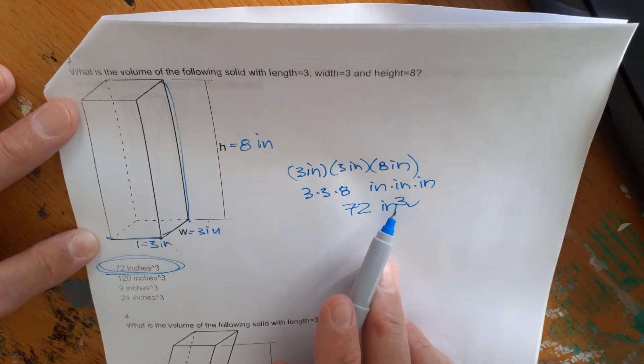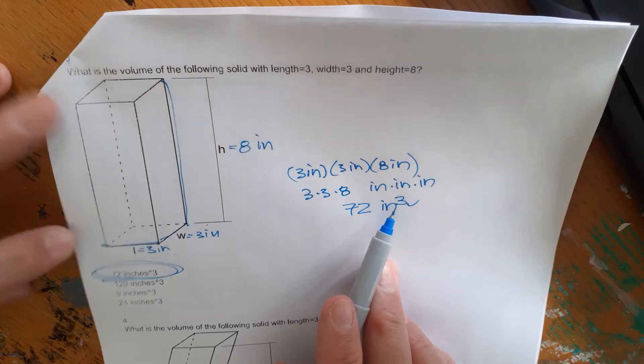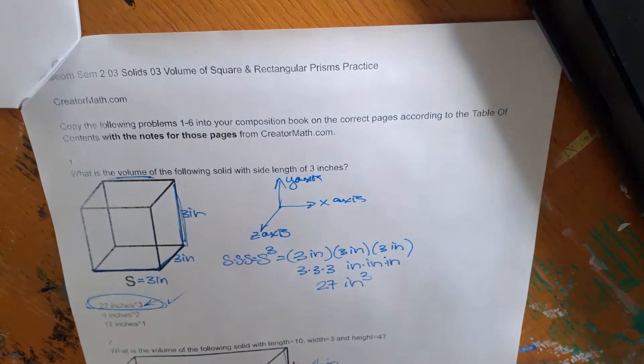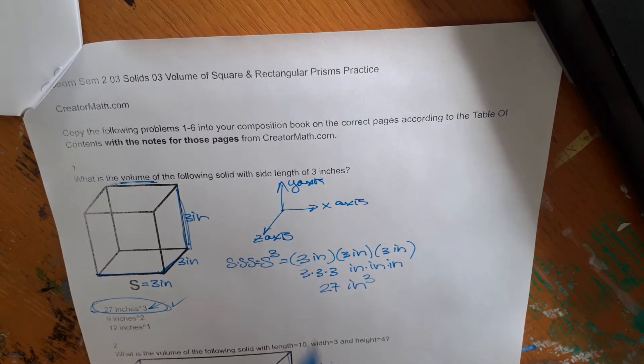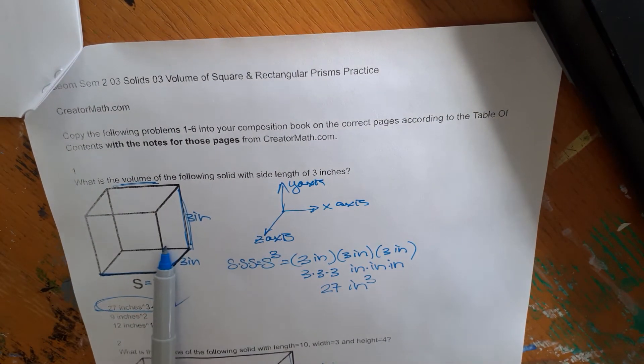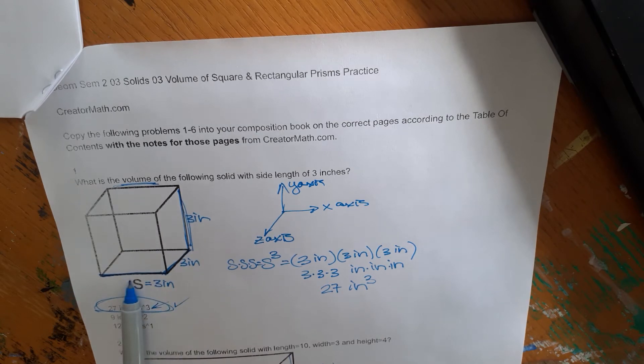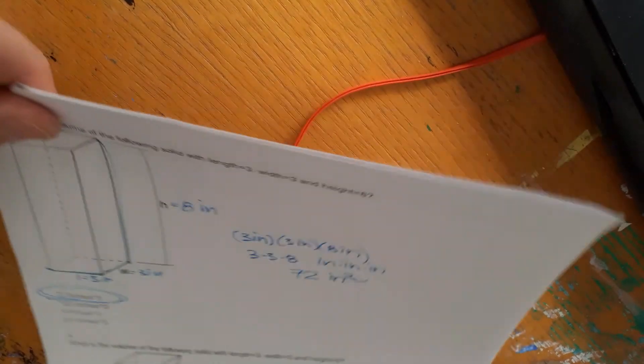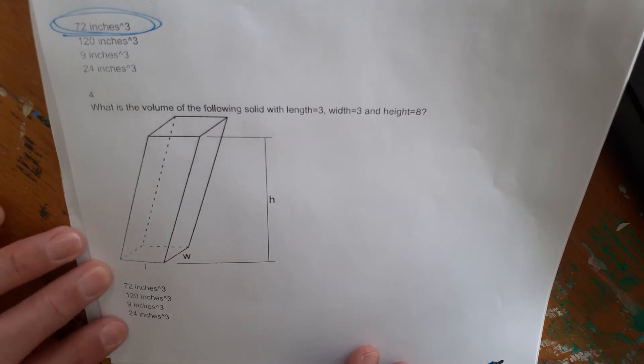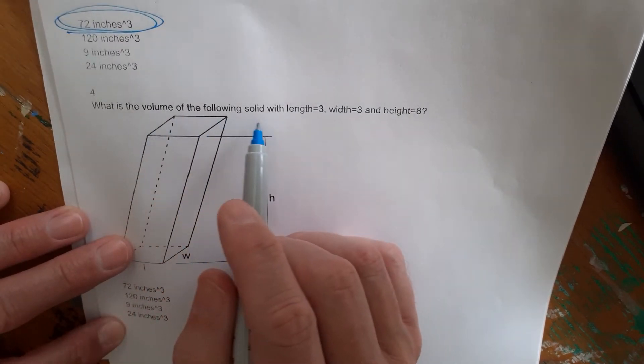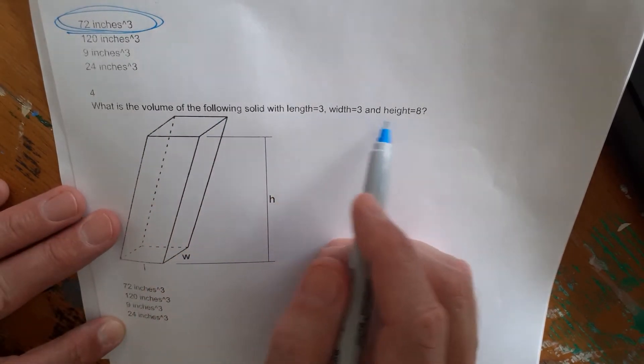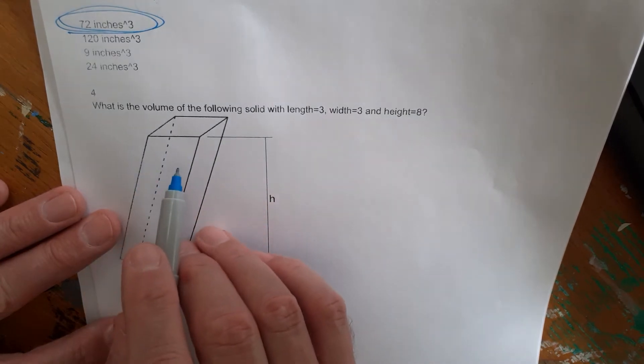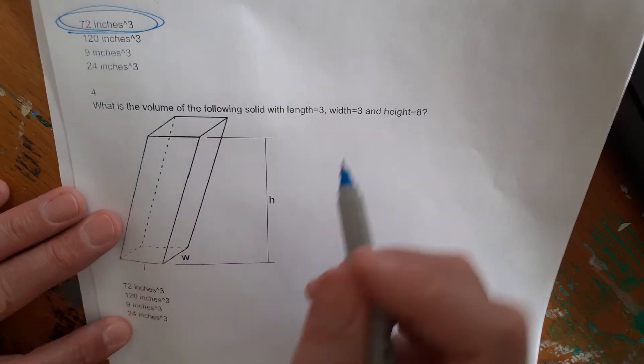Or you could say cubic inches. Anytime something's the power three, where do we get the power three? It comes from that original problem we did right here where you're talking about a cube. This one right here, that's why anything to the power three becomes named cubed because you go ahead and multiply this s to the power three produces the volume of a cube. And that's why we use the slang. Anything to the three power is cubed. What's the volume of the following solid with length three, width three, and height eight? So rectangular prism, notice that it is oblique.